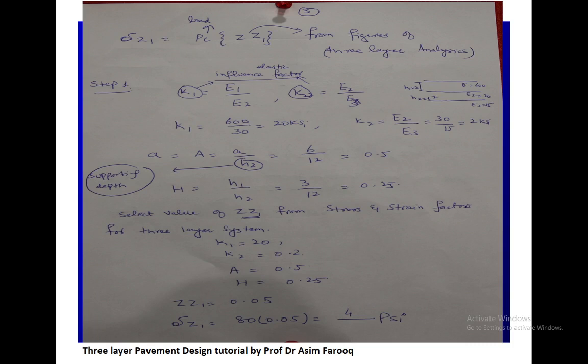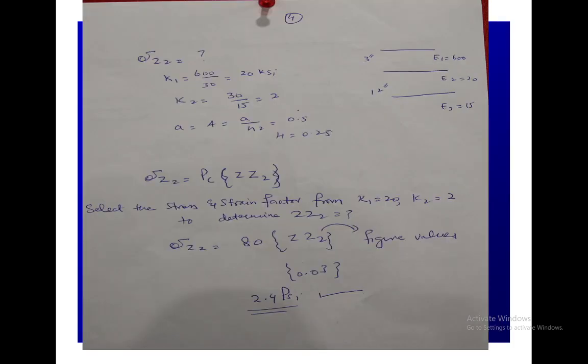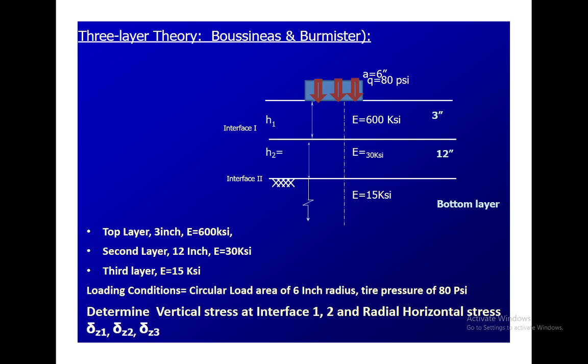Similarly, we now jump to determining the vertical stresses at the second interface — the lower interface. We use the same values of K1, K2, A, and H, but now we need to determine ZZ2 instead of ZZ1. We go to the same chart and determine ZZ2. After determining both vertical stresses, we now want to determine how we can measure the radial stresses. Sigma Z1 and sigma Z2 are already derived: 4 psi and 2.4 psi respectively. We now need sigma R1, sigma R2, and sigma R3.